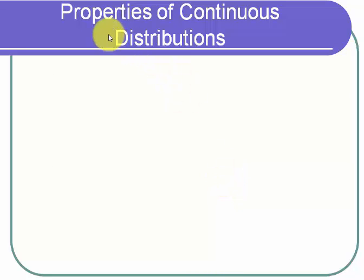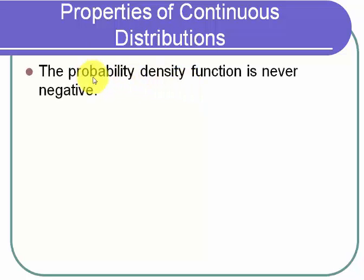Now let's look at some properties of continuous distributions. The first property is that the probability density function can never be negative. It can be zero at some values, but it can never be negative. It just doesn't make any sense to talk about negative probabilities, so the probability density function can only be zero or positive.